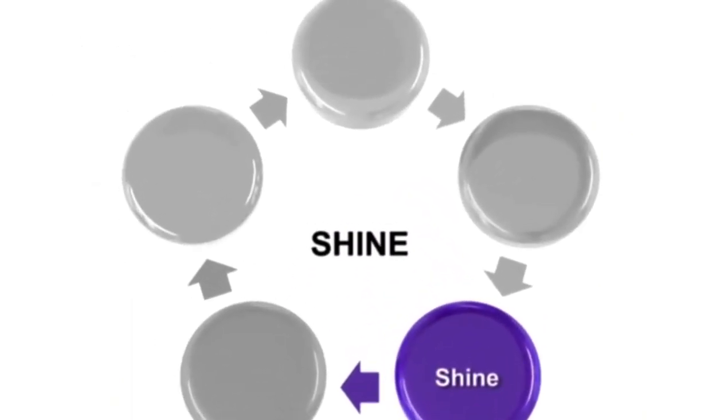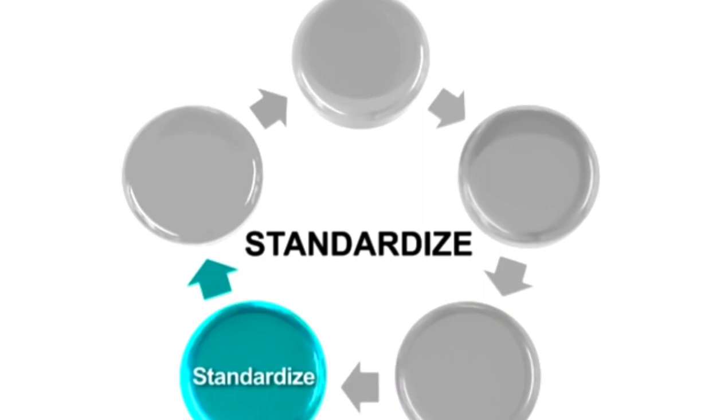The next step of Five S is referred to as Standardize. Its goal is to put procedures and instructions in place to help control and keep the station in the condition that it is in at the end of the first three phases.